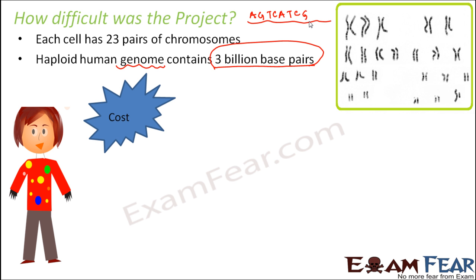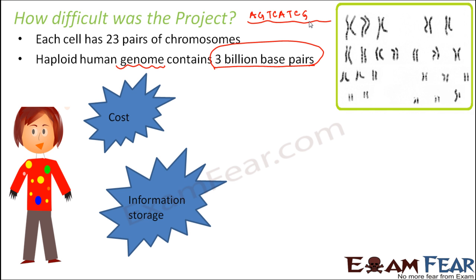The first difficulty was cost. The cost for sequencing one base pair was approximately 3 US dollars. So if you want to sequence all 3 billion base pairs, the cost would be around 9 × 10⁹ US dollars, which is a very huge amount. So cost was one major parameter.